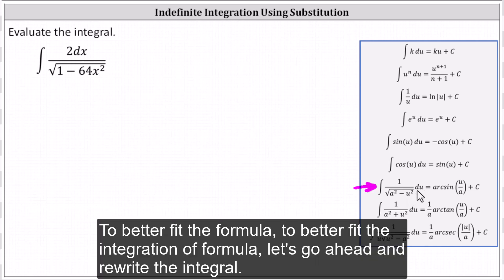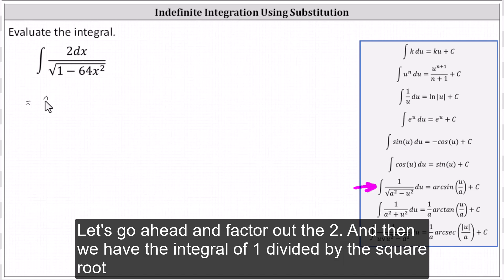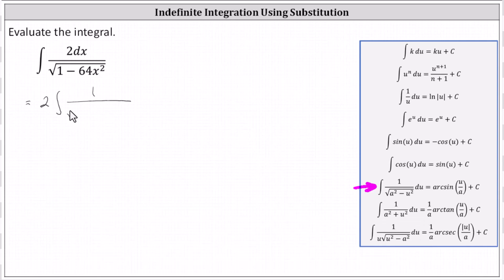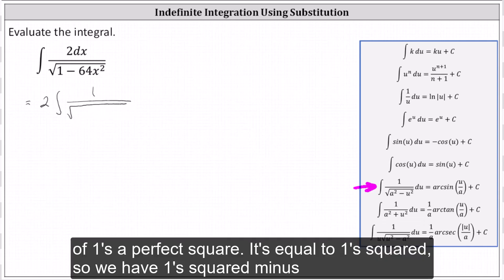To better fit the integration formula, let's go ahead and rewrite the integral. Let's factor out the two, and then we have the integral of one divided by the square root of one's a perfect square,